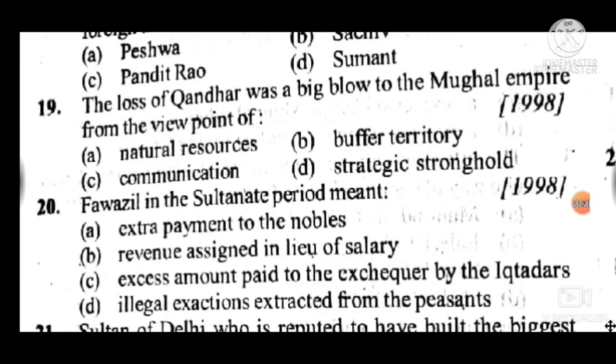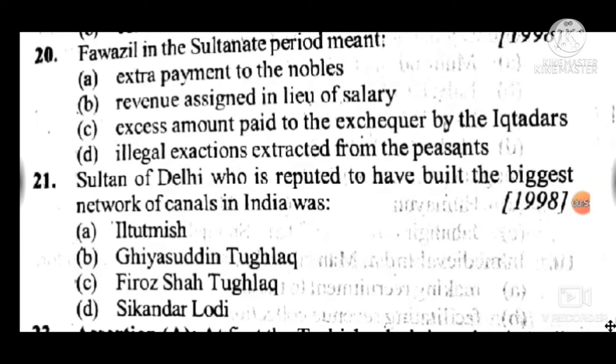Question 20: Fawazil in the Sultanate period meant — answer is C, the excess amount paid to the exchequer by the iqta-holders. Question 21: The Sultan of Delhi who is reputed to have built the biggest network of canals in India was — answer is C, Firoz Shah Tughlaq.